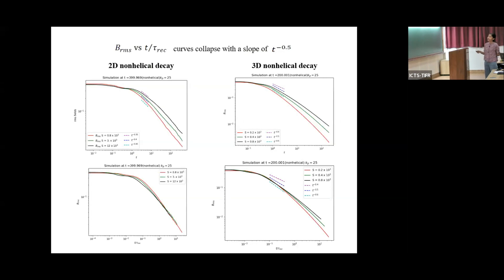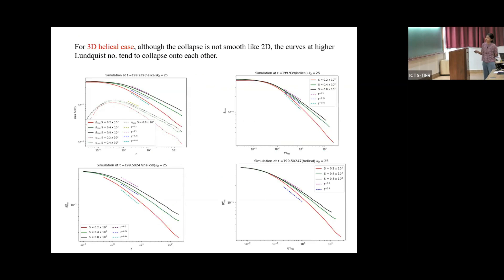For the 2D and 3D non-helical systems, we can see that the B_RMS curves collapse on normalizing the time axis with the reconnection timescale, and they decay with the power law of t to the power minus 0.5, which agrees with the theoretical power law decay of B_RMS versus t when A-squared is the conserved quantity. Also, for the helical case, we are getting a slope of minus 0.3, which is in close agreement with t to the power minus 0.271 — the theoretical prediction of power law decay for B_H_RMS versus t when helicity is taken as the conserved quantity.